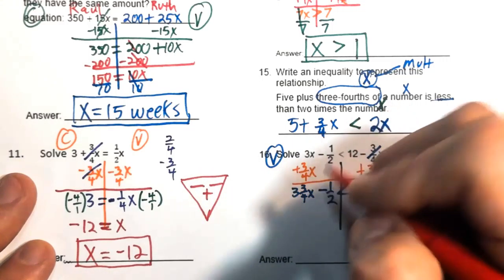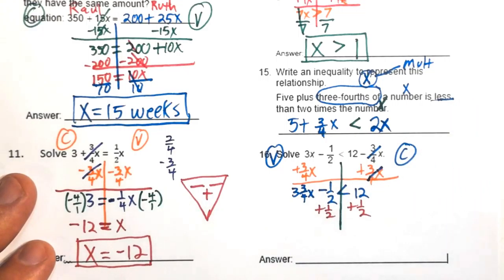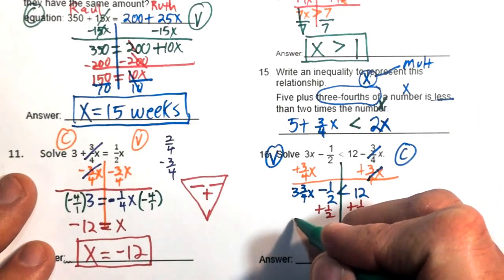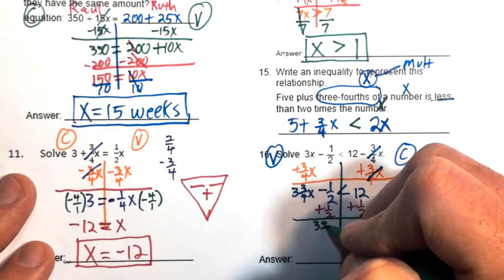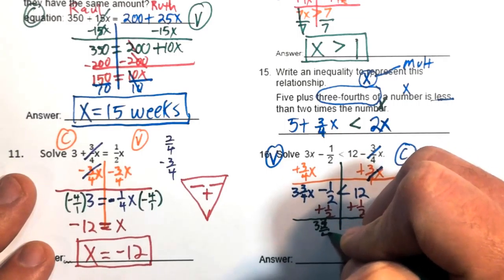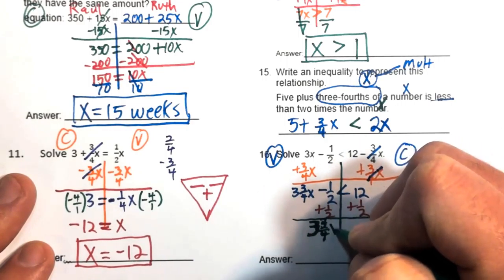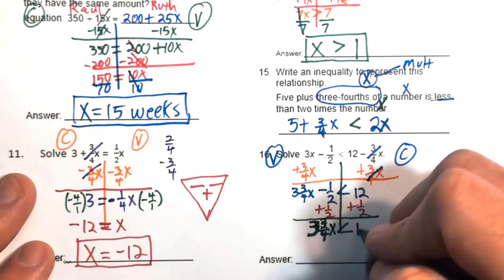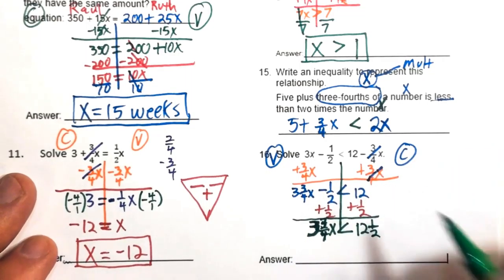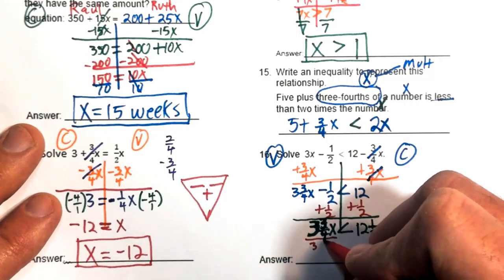Add one-half to both sides: 12 plus one-half equals 12 and one-half. So we have three and three-fourths x less than 12 and one-half. Divide both sides by three and three-fourths, rewriting horizontally.